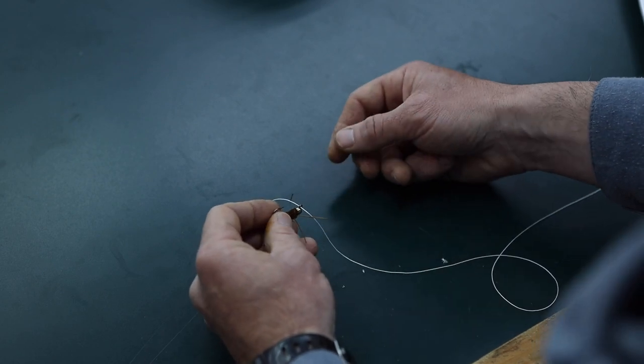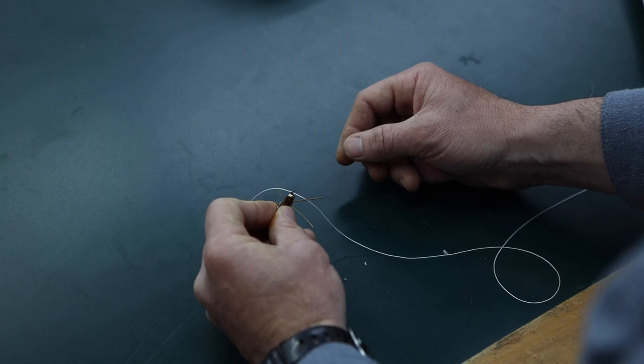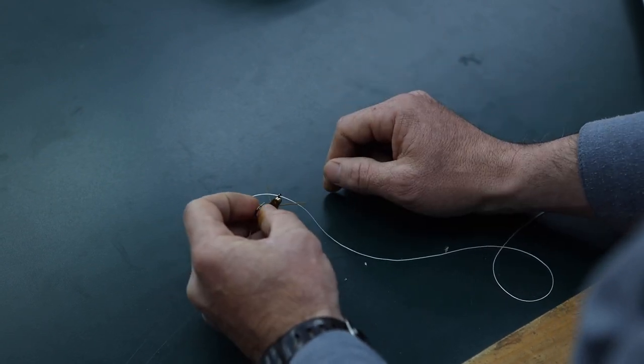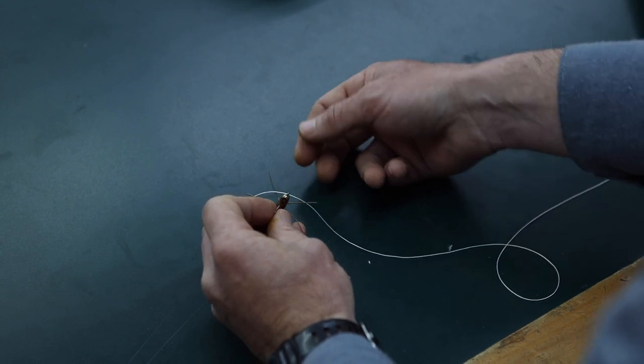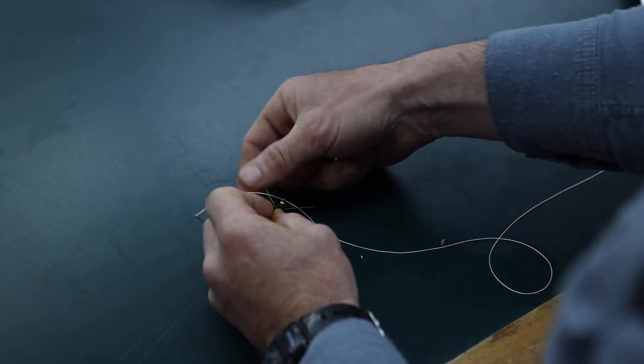Alright, it's time to tie the 1620 knot. When you're threading your tippet material through the eye of the hook, it doesn't matter whether you go up or down through the eye. In this case, I'm using a jig hook, so it really doesn't matter. The knot will come out the same.